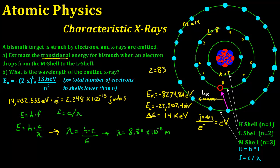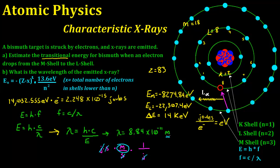Just to confirm the units: H is in joule-seconds, C is in meters per second, and E is in joules. The joules cancel out, the seconds cancel out, and you're left with meters, which is what we want. The wavelength of the emitted x-ray is 8.84 times 10 to the negative 11 meters. I hope that helped.